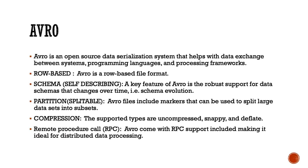Avro is a row-based file format. At a basic level, row stores are great for transaction processing. Column stores are great for highly analytical query models. Row stores can write data very quickly, whereas a column store is awesome at aggregating large volumes of data for a subset of columns.